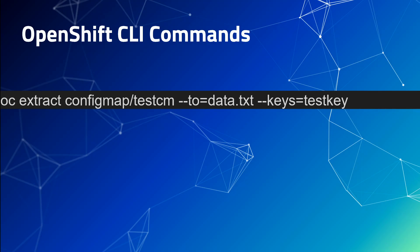In comparison, if you want to use kubectl you would need to use the kubectl get command with the config map name and then some JSON path syntax to extract the data, and then redirect the output to data.txt or whatever file you want. I find that working with JSON path is still a bit cumbersome, and in comparison oc extract seems way easier.